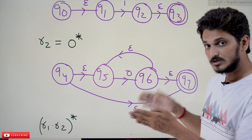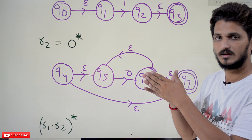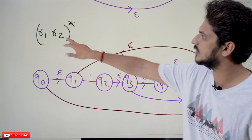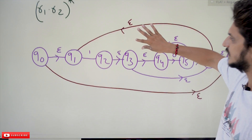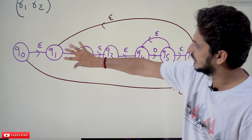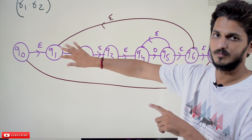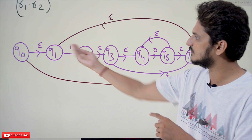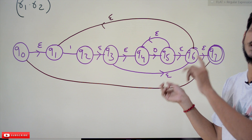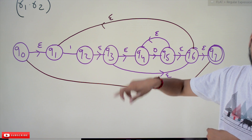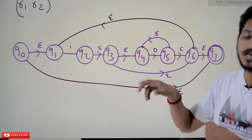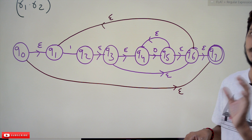For (10*)*, we treat it as (r1 · r2)*. The finite automata accepts 1 followed by 0*. This means 1 followed by any number of 0s. The concatenation r1 · r2 gives us the automata for 10*, and this whole pattern can be repeated any number of times — that is what the expression says.